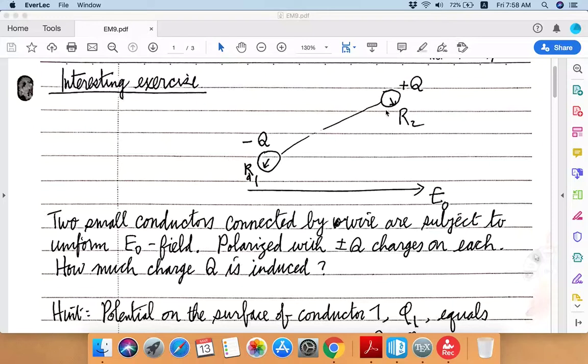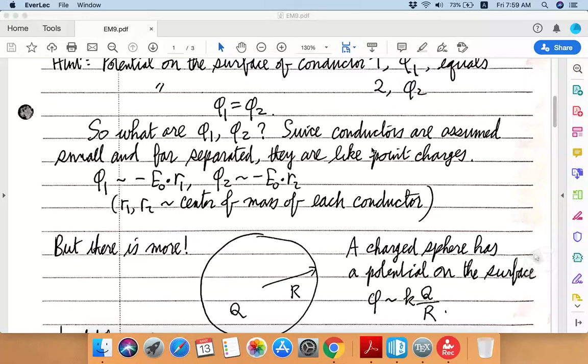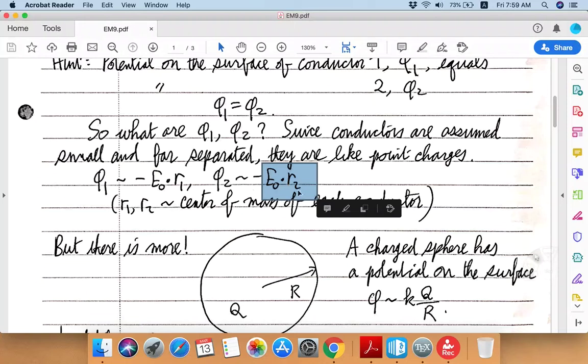So what are these potentials? Well, since these conductors are, by assumption, rather tiny and they're far separated from each other, to a first approximation they can be regarded as points. So if I take the center of mass of the first conductor as little r1 and center of mass of the second conductor as little r2, then their potential due to the uniform electric field is given by these familiar expressions as the inner product between the electric field vector and the coordinate vector.